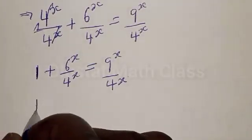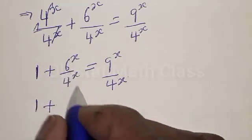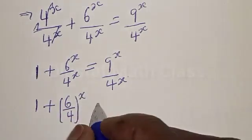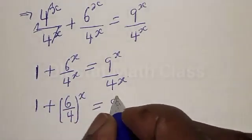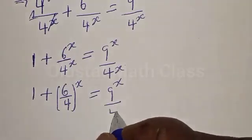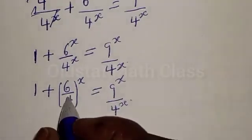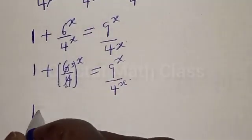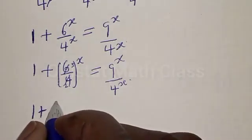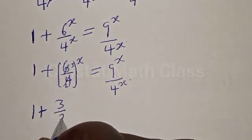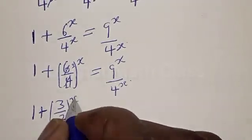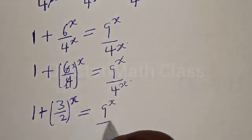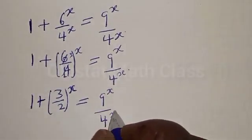We have 1 plus 6 over 4, all raised to power x, equal to 9 raised to power x divided by 4 raised to power x. Simplifying 6 over 4 by dividing numerator and denominator by 2, we get 3 over 2. So we have 1 plus 3 over 2, all raised to power x.